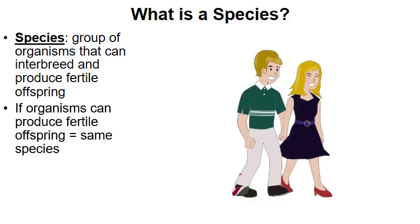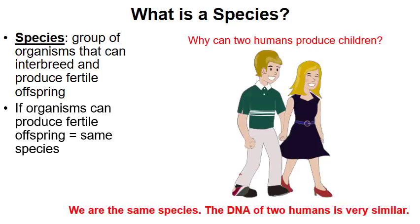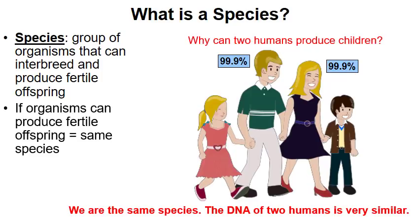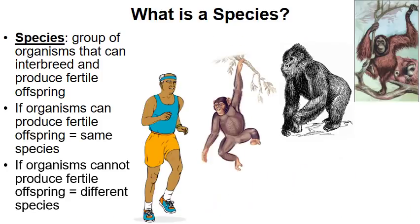So if organisms can produce fertile offspring, we call them the same species. Here's a man and woman — why can two humans produce children? Yes, we are members of the same species, but there's a better answer: the DNA of two humans is remarkably similar. In fact, it's estimated that the DNA of every human on Earth is about 99.9% identical, which is why a man and a woman can produce children.